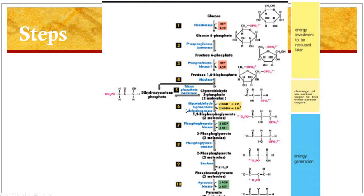Two molecules are produced at each step from step number 5, 6 and onwards. In step number 6, glyceraldehyde-3-phosphate is dehydrogenated and simultaneously phosphorylated to produce 1,3-bisphosphoglycerate in the presence of glyceraldehyde-3-phosphate dehydrogenase. This is a reversible step which occurs with the help of NAD+, and this produces NADH. At this step there is a generation of 2 molecules of NADH, and 1 molecule of NADH will produce 2.5 ATP.